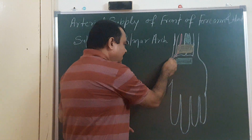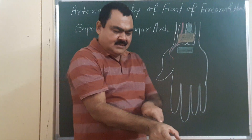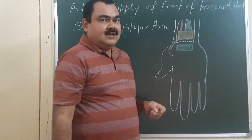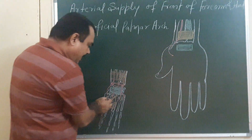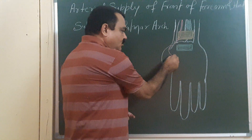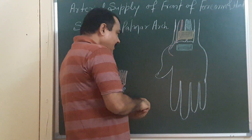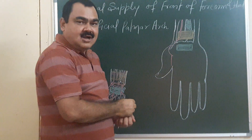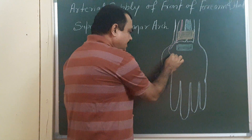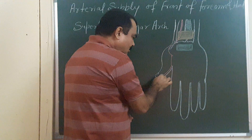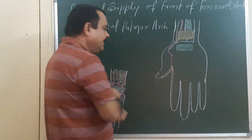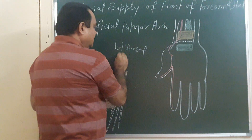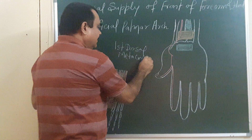From here it turns toward the anterior side, passing in between the two heads of the first dorsal interossei. Before reaching there, it gives a branch known as the first dorsal metacarpal artery. This first dorsal metacarpal artery gives supply to the adjacent sides of the first and second finger.